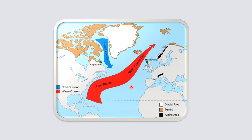Here we can see how the cold Labrador current, coming from the north, has a very cooling impact along the eastern coast of Canada. Because of this cold Labrador current, most ports over here remain ice-bound for a longer period of time. On the other hand, the North Atlantic Drift, which is a warm current, ensures that even at very high latitudes the areas around the Scandinavian mountains as well as parts of the British Isles remain warm even during winter.